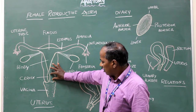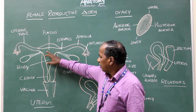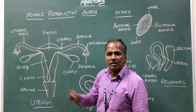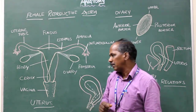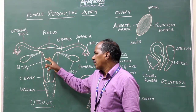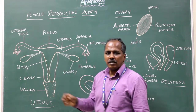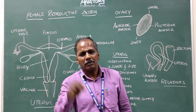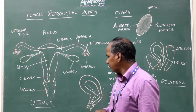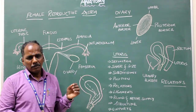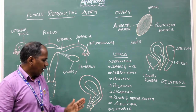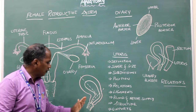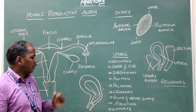This is the cervix, and this is the body. The part of the uterus above the uterine tube is known as the fundus. The body or the fundus is the common site for implantation of the embryo. Position: it is anteverted and anteflexed.